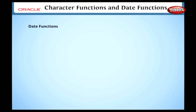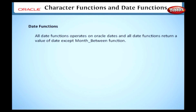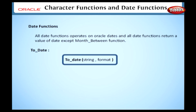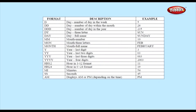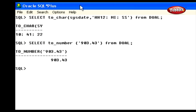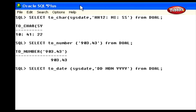Now we have studied converting numbers to char. The TO_NUMBER function converts a character value to a number value. In the syntax, string1 is the string that will be converted to a number; format mask is optional and specifies the format to convert to; and NLS language is also optional, specifying the NLS language used for the conversion. For example: SELECT TO_NUMBER('903.43') FROM dual. This statement converts the string value to a number data type.